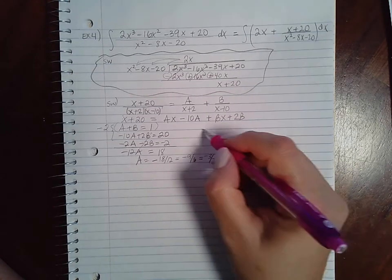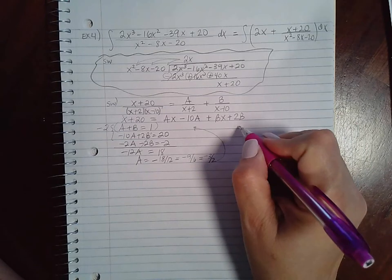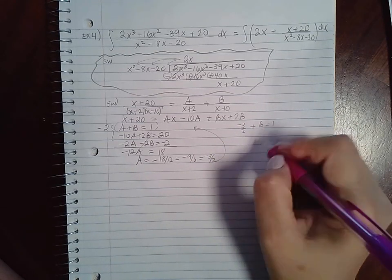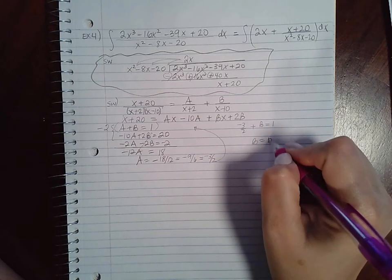So if I go back up here and plug that in for a, I get negative 3 over 2 plus b equals 1, which means b would have to be 5 halves.